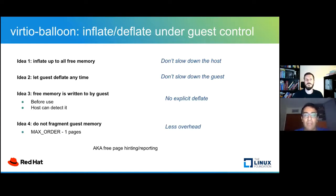The last idea is that we do not care about reporting small 4-kilobyte chunks of free RAM spread all over guest memory. Modern guests have compaction mechanisms which can, with time, help create large free pages on the order of multiple megabytes. We only inflate with the largest possible chunk of memory still tracked by the guest memory management. Combining these ideas, we get features called free page hinting and free page reporting.